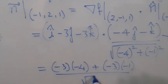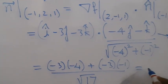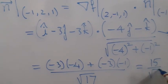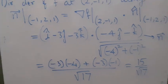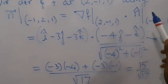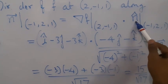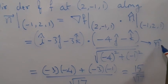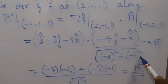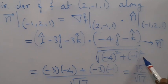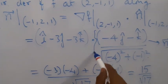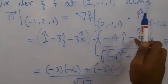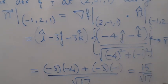The directional derivative of f at (2,-1,1) along vector n at (-1,2,1) is grad f · n̂. This equals (î - 3ĵ - 3k̂) · (-4ĵ - k̂) divided by |n| = √(16 + 1) = √17. Since there is no î component in vector n, the dot product gives (-3)(-4) + (-3)(-1) = 12 + 3 = 15. So the answer is 15/√17.